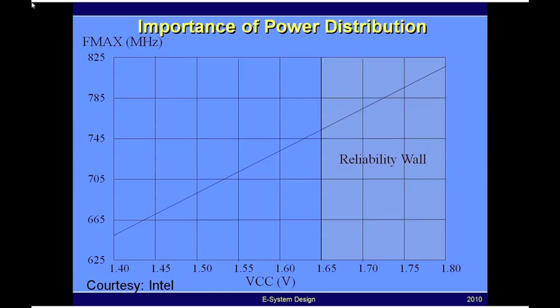In this example, the nominal operating voltage of this transistor is 1.55 volts. Since these transistors are powered by the power distribution network, and because there are parasitics in that network, this voltage is going to vary as a function of time. That variation is plus or minus 100 millivolts, which represents the power supply noise.